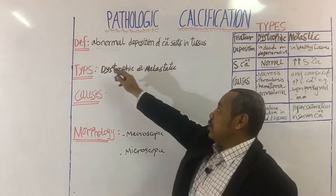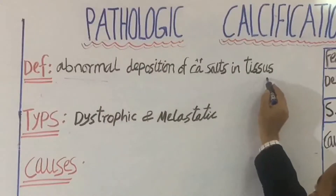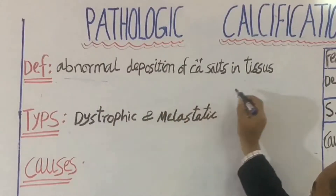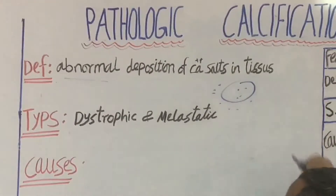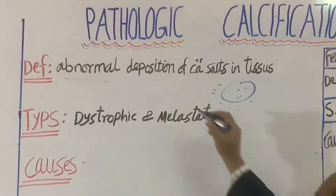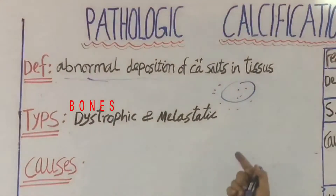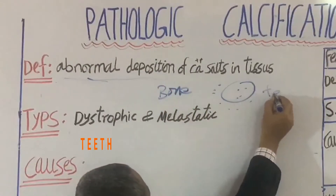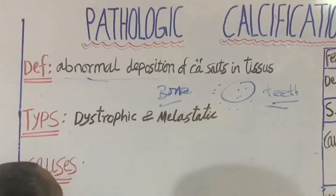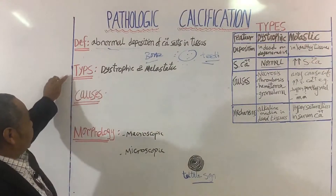Let us start with the definition of pathologic calcification. It is an abnormal deposition of calcium salts in tissues — either intracellularly or extracellularly. This means there is normal deposition of calcium only in specific tissues: bones and teeth. Only in bones and teeth.